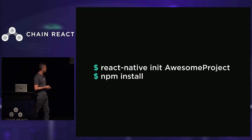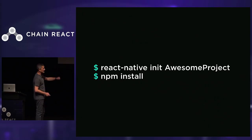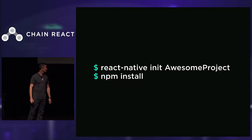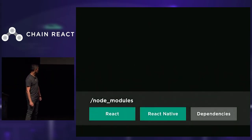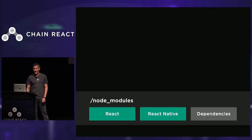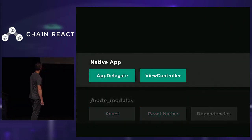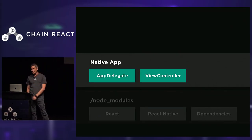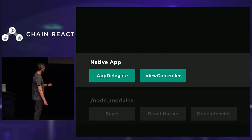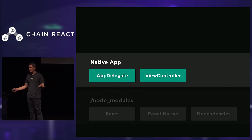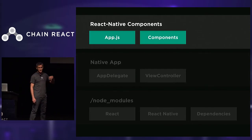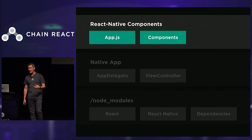Let's look at something we all know. When you do React Native init for a new project and run npm install, the first thing you get is your node_modules folder with all your dependencies, including React and React Native modules. Next, you have your native classes — you can choose to never touch these, or you might expand the native layer and build yourself a hybrid app. And finally, we have the components of your app — your app declaration and your platform-specific components for React Native.